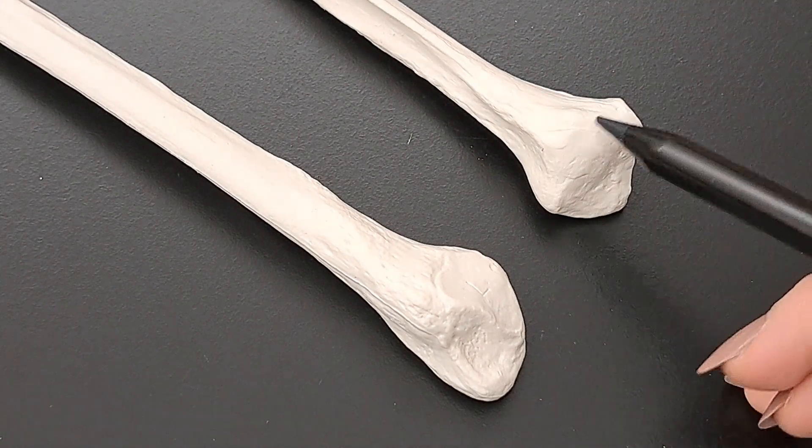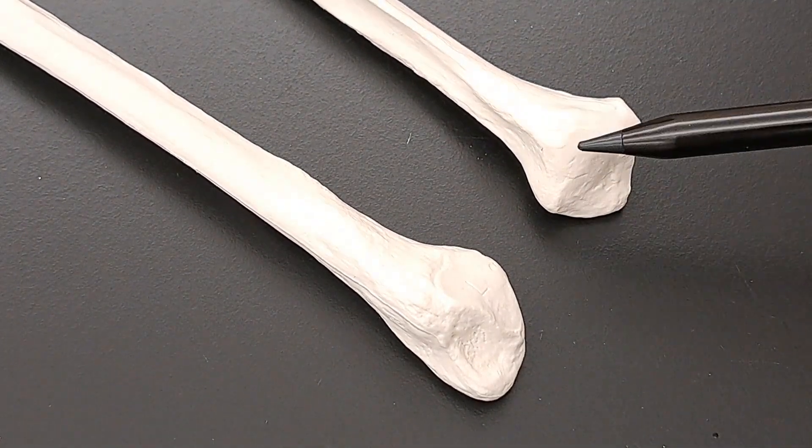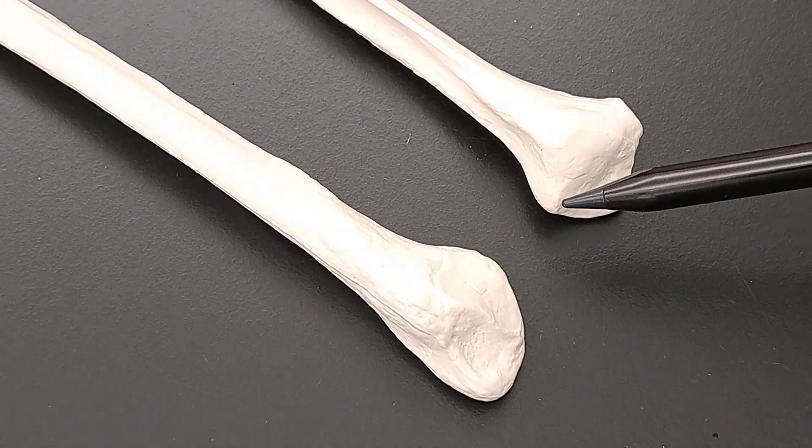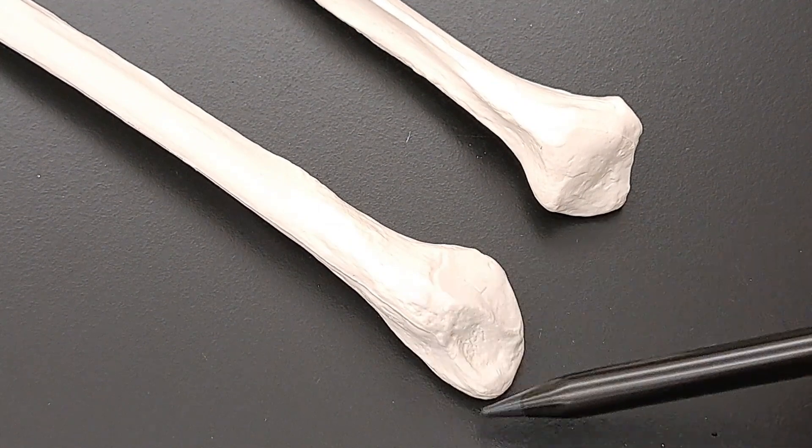Whenever you see this triangular surface, this right here is the proximal end of the fibula, which is the end closer to the knee joint, whereas this is the distal end of the fibula.